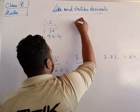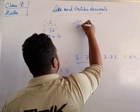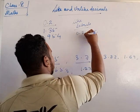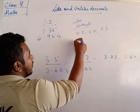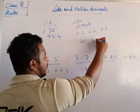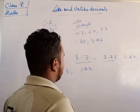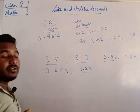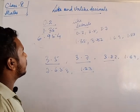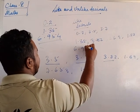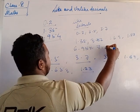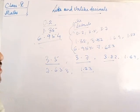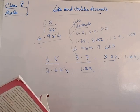Like decimals: 0.2, 3.5, 3.7 — same type. Similarly, 1.35, 3.82, 1.69, 1.23 — these are like decimals. And 6.954, 7.653 — all three digits after the point, so these are also like decimals. If they are randomly mixed with different digits after the point, then all are unlike decimals. That was about like and unlike decimals.